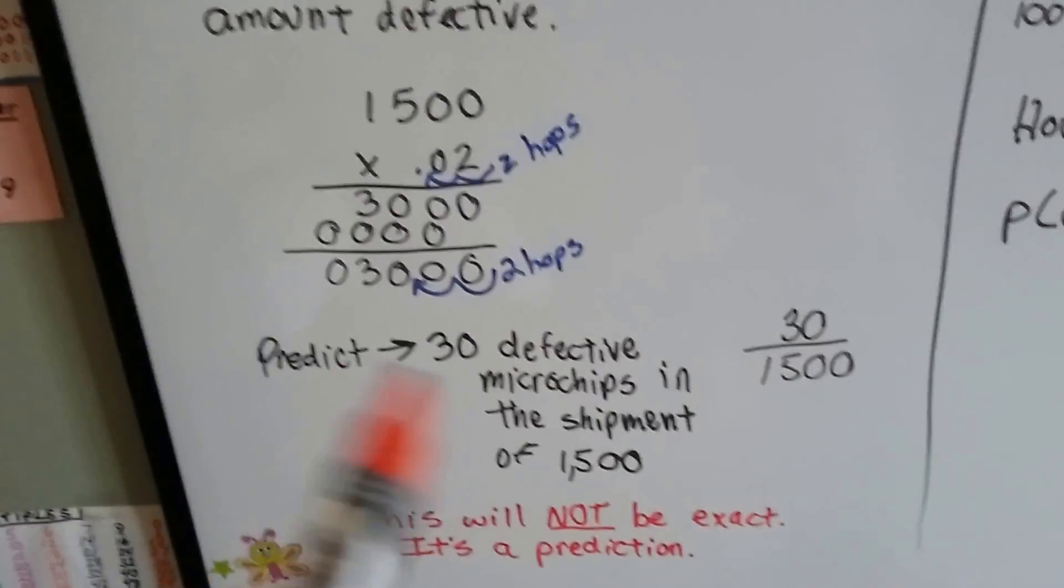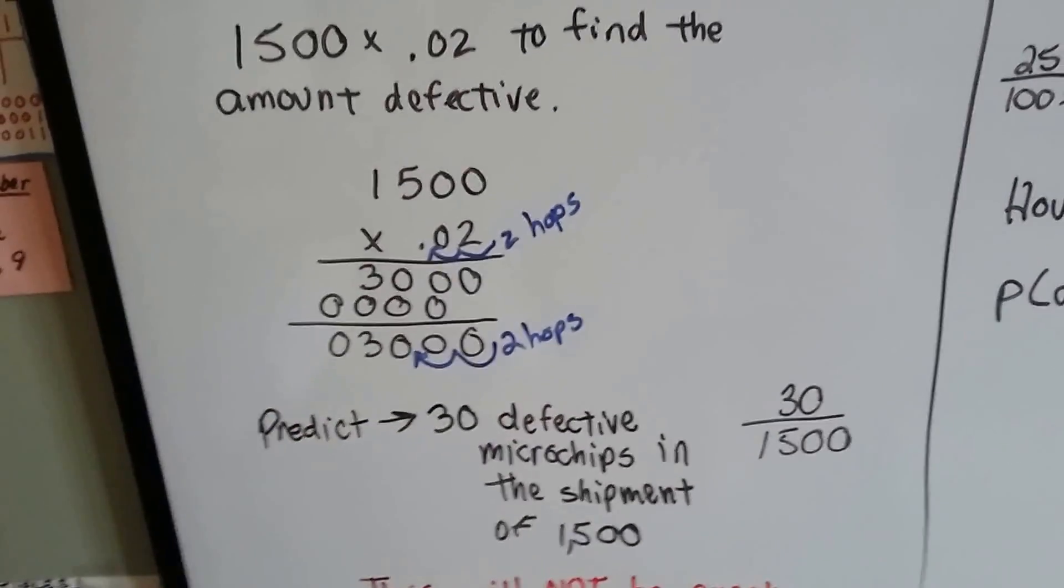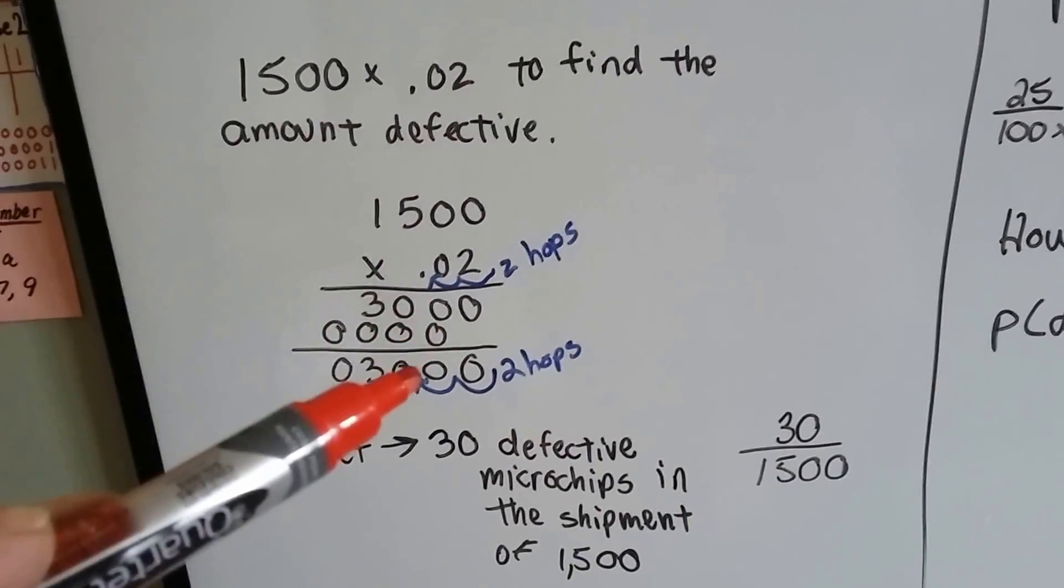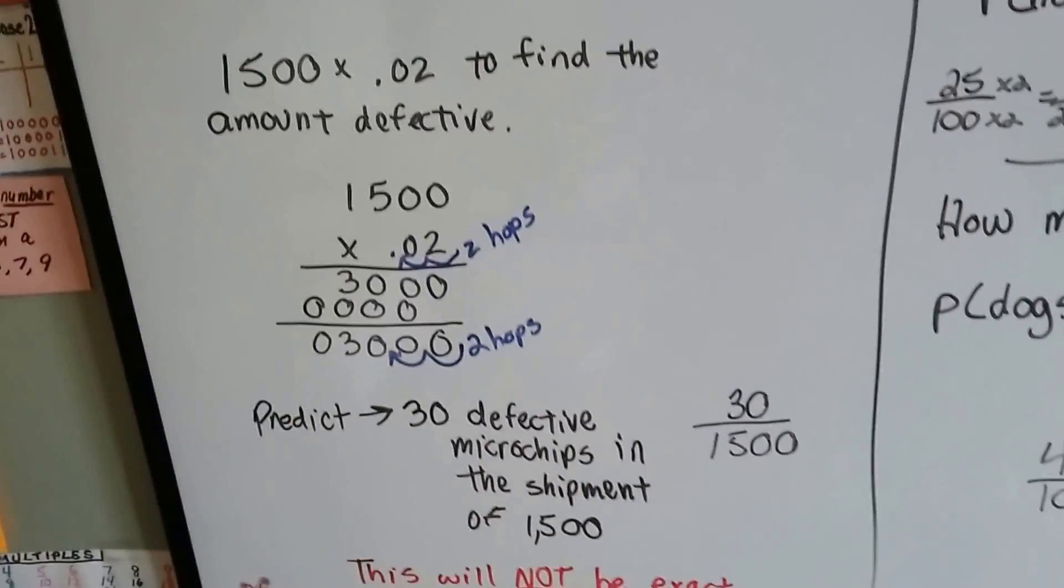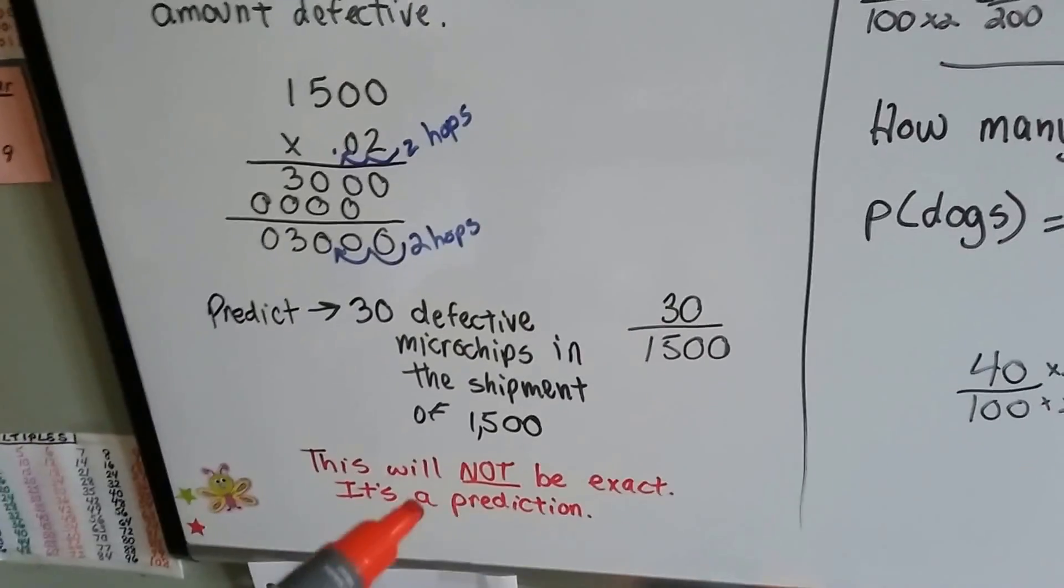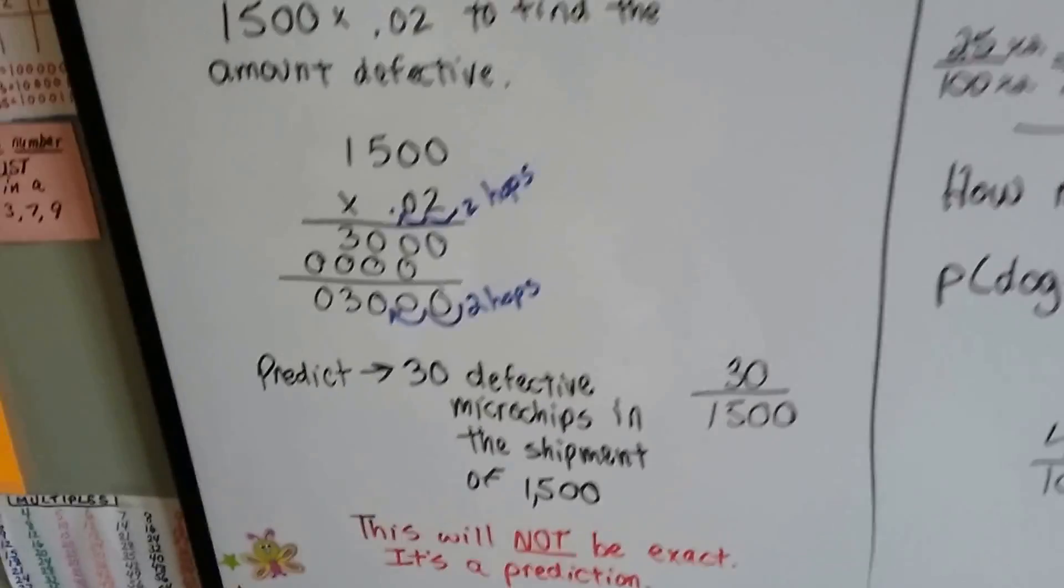Now, this is not the exact amount because he didn't check each single microchip. He's just guessing that because 2 out of 100 are defective, that 30 are going to be defective out of the 1,500. It's a prediction, not an exact amount.